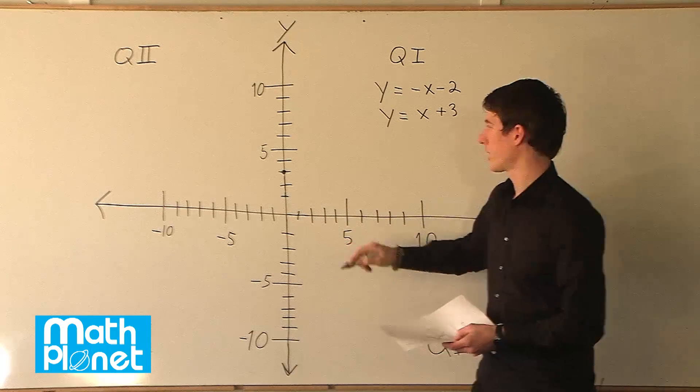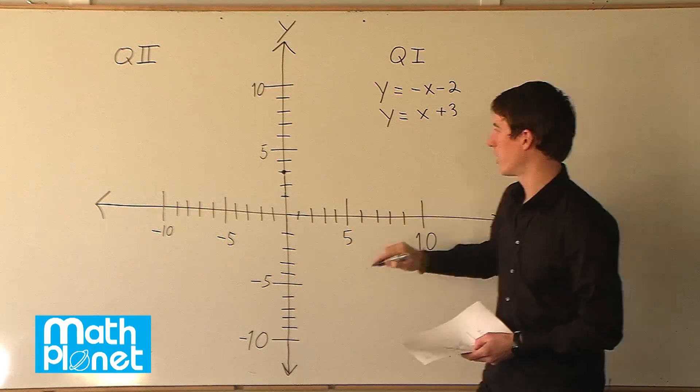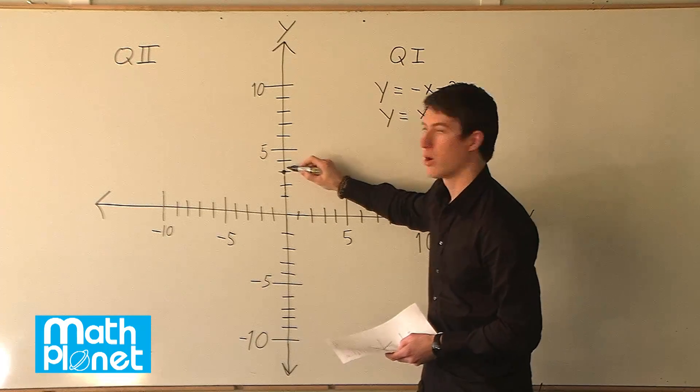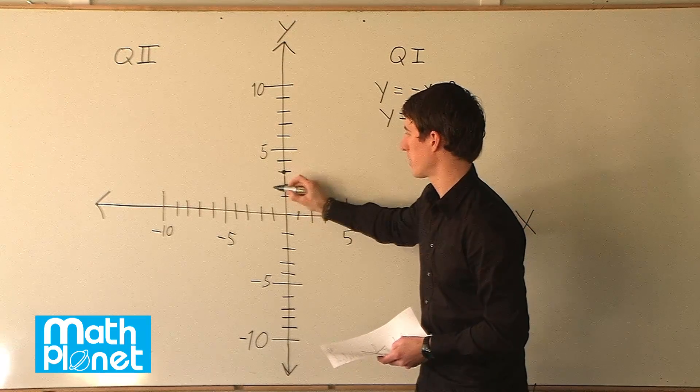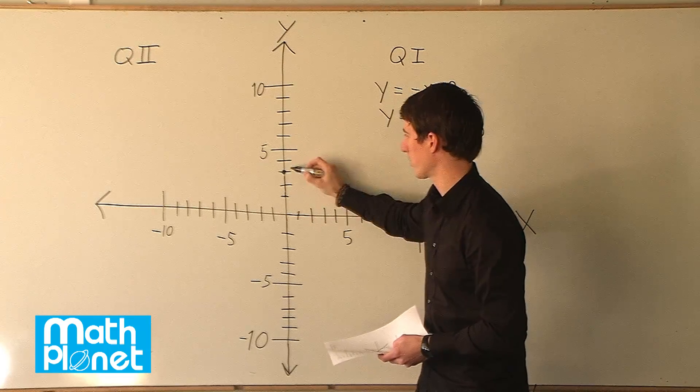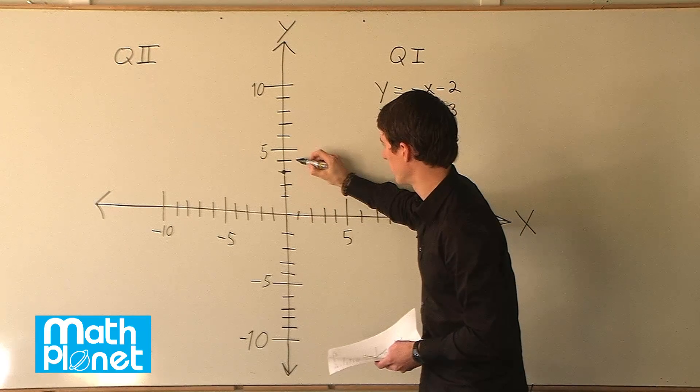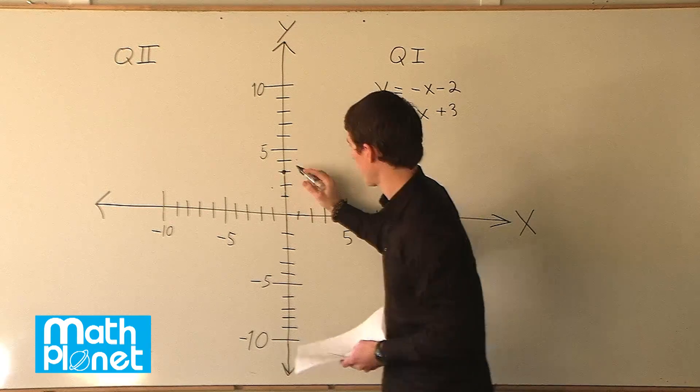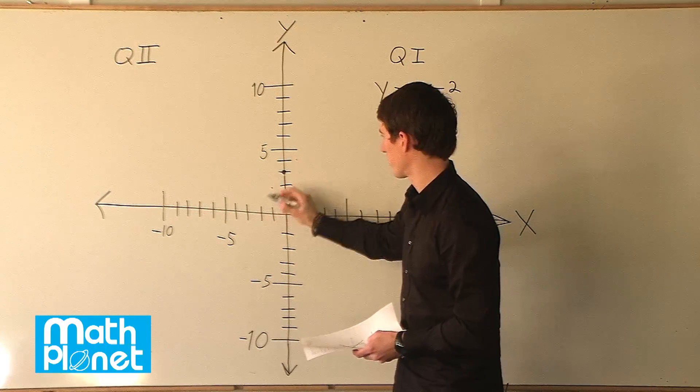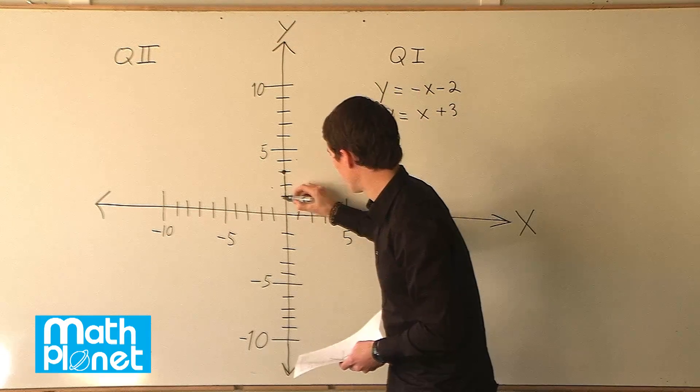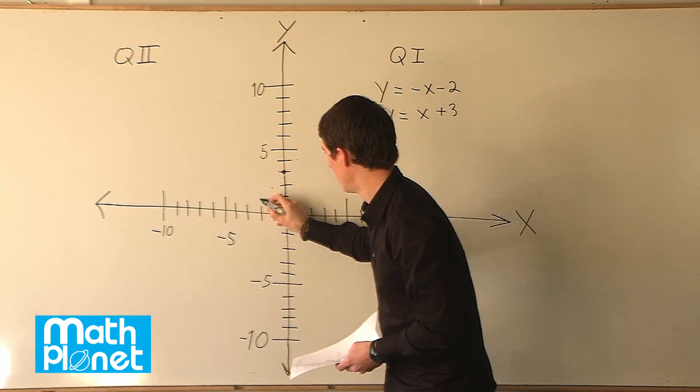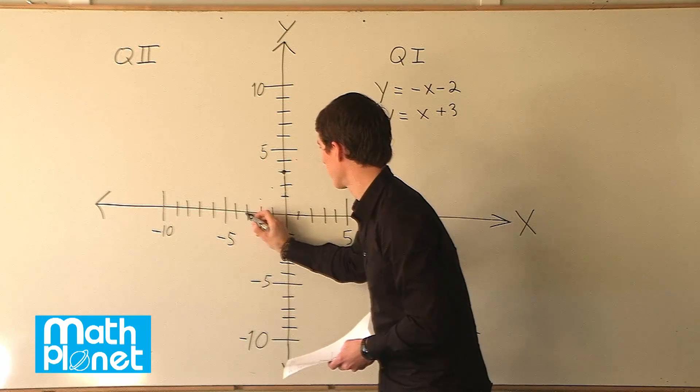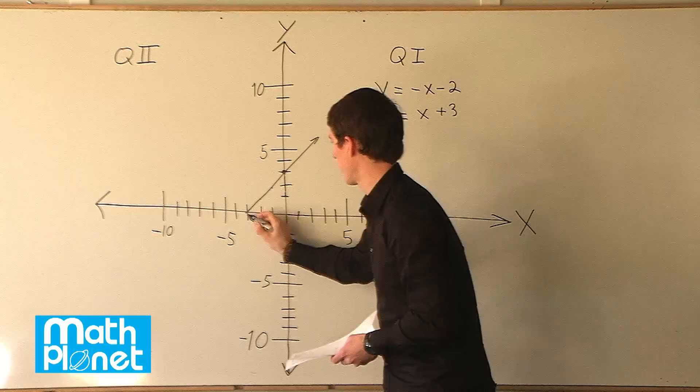So now we need one more point and we can graph from there. We have the slope of one, so we want to go up one and to the right one or down one and to the left one. So either way it's going to be just a basic line like this. So up one and to the right one. Down one, to the left one. So now we have a point that crosses like so. Down one, over one more. And down one and over one more. So it crosses right about there. So a line like that.